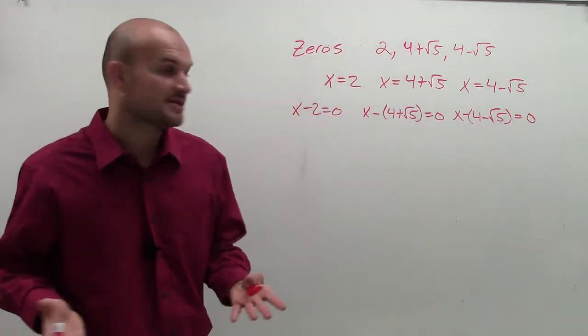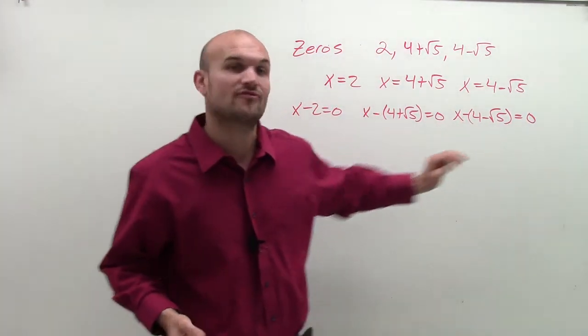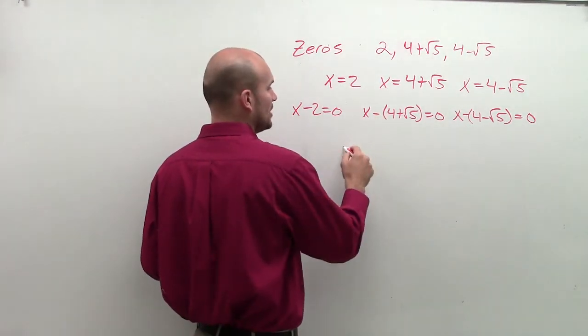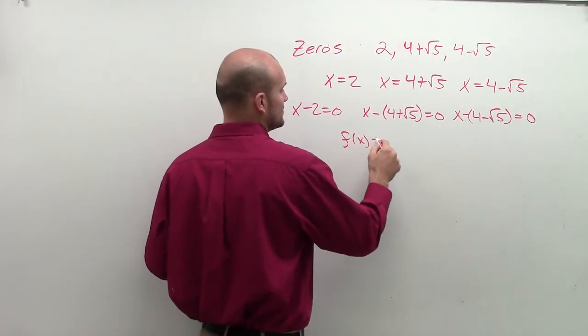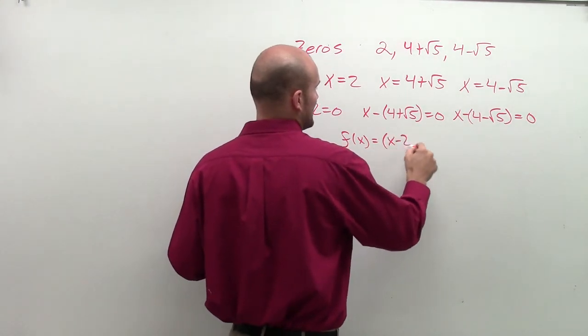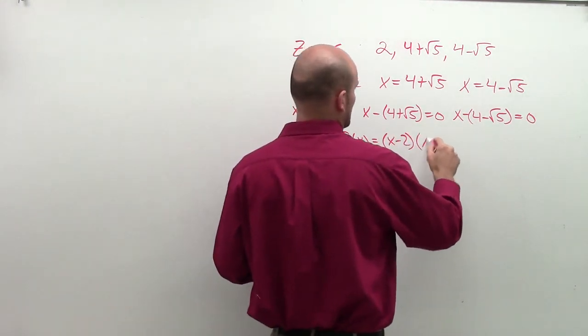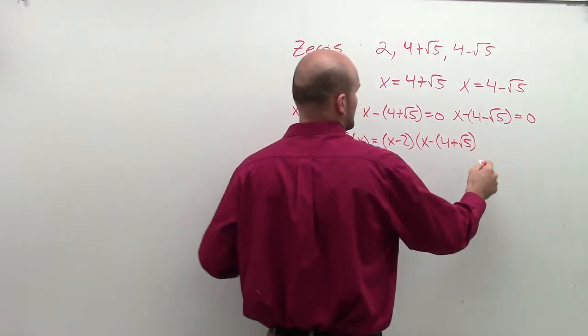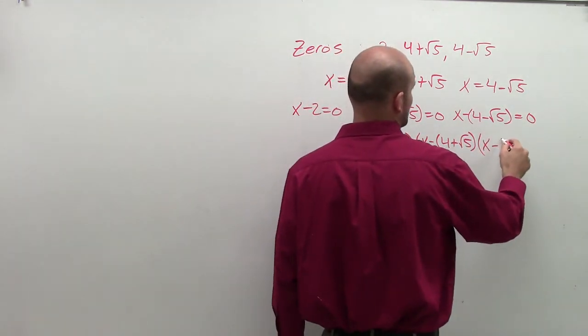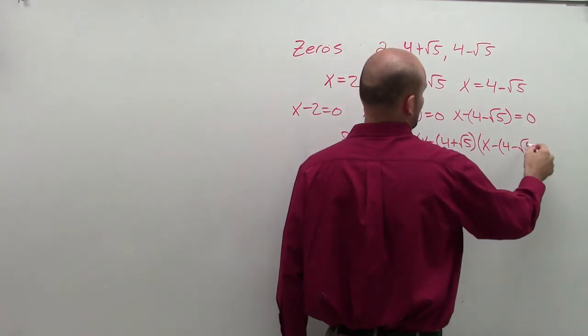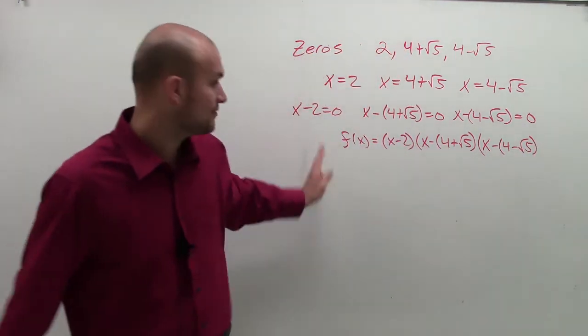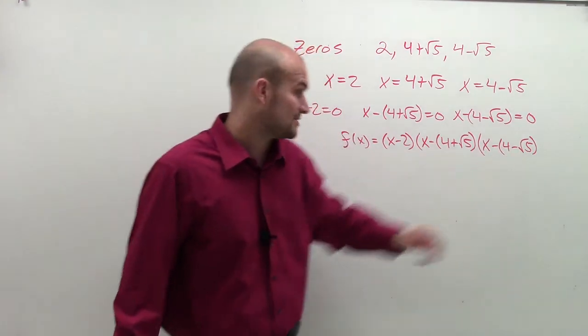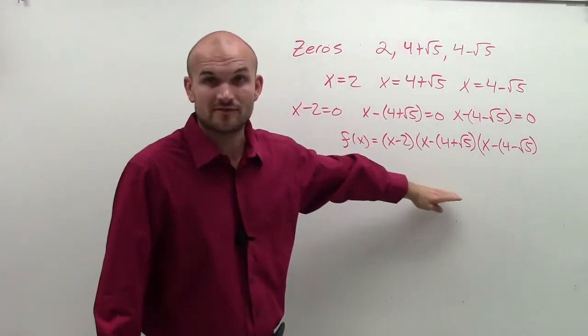Now, once we have it to this point, we can write each one of these as factors multiplying to give us our polynomial. So we could say f of x is going to equal x minus 2 times x minus 4 plus square root of 5 times x minus 4 minus square root of 5. So now we have it written as our list of factors. So I took it from the zeros down to the factors.